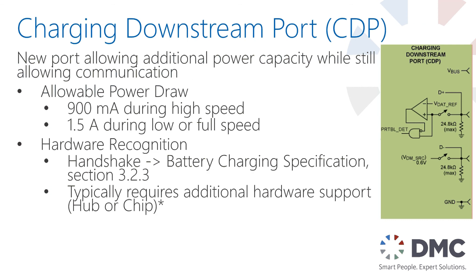The next port added was the charging downstream port. This is a multi-purpose port — it still has capabilities for communication, but it has increased power draw capability up to 900 milliamps for high-speed communication and up to 1.5 amps for lower full-speed USB communication. Detection of this port requires a hardware handshake detailed in section 3.2.3 of the spec, which typically requires hardware support on your computer or hub, and allows devices to detect that they're plugged into a charging downstream port.